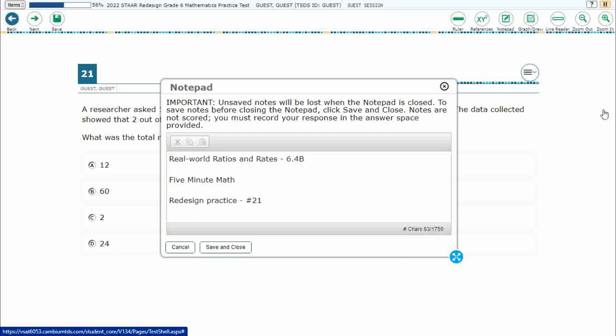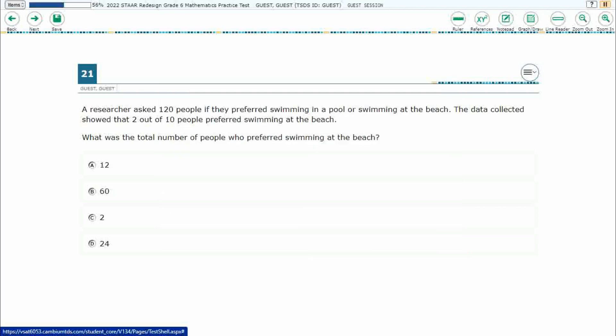Hello and welcome to 5-Minute Math. Today we are looking at the 6th grade concept of real-world ratios and rates. This is standard 6.4b in the great state of Texas, and we are using item number 21 of the Redesign Practice Online Star Test.